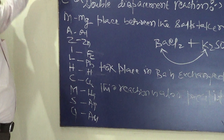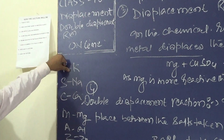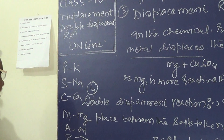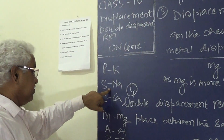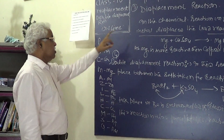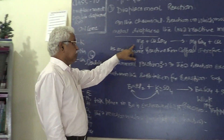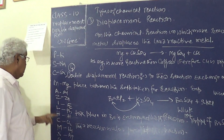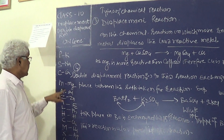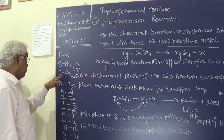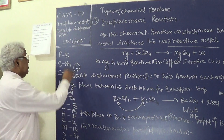It means that the more reactive metal will displace those below it. Potassium will replace all metals below it, sodium will replace all below it, magnesium will replace all below it. For example, magnesium will replace copper, because magnesium is more reactive.